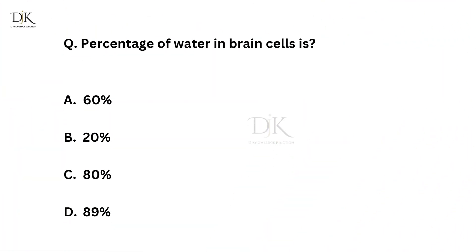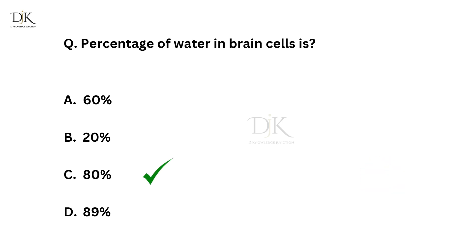Percentage of water in brain cells is? Right answer is 80%.